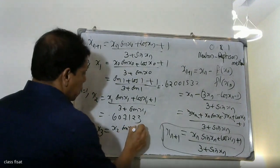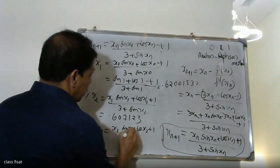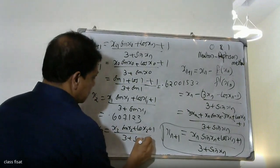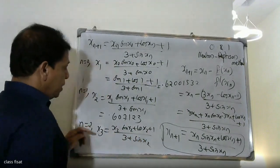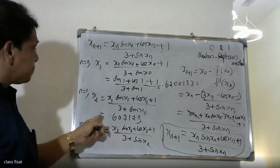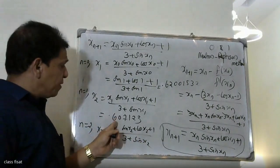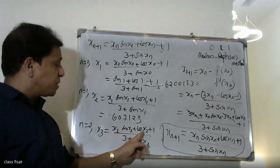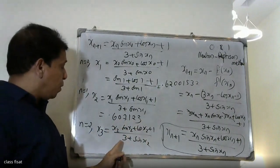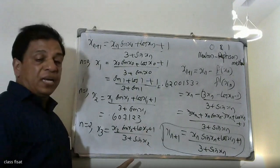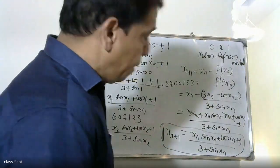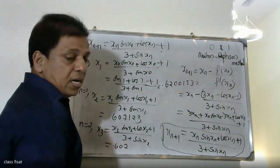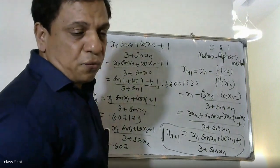Substituting x2: x2 sin x2 plus cos x2 plus 1, divided by 3 plus sin x2. We write x2 equals 0.607. Simplifying, we get x3 value equal to 0.607102.